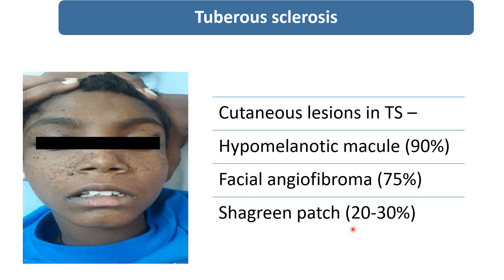This is characteristic of tuberous sclerosis. These are raised lesions with an orange peel consistency, present in the lumbosacral region. So other than facial angiofibroma, these cutaneous lesions can also be present in tuberous sclerosis.